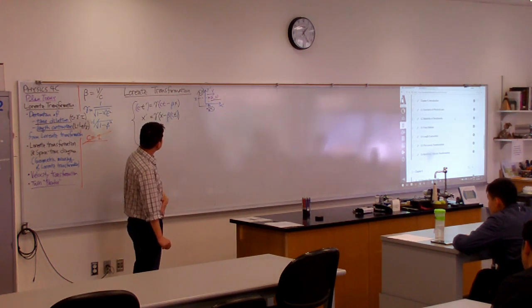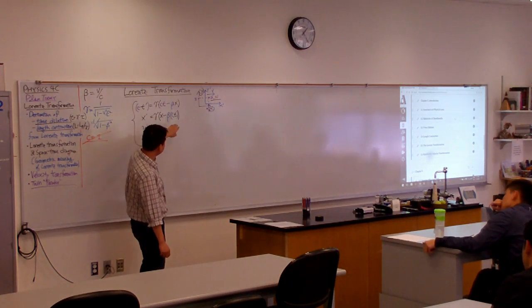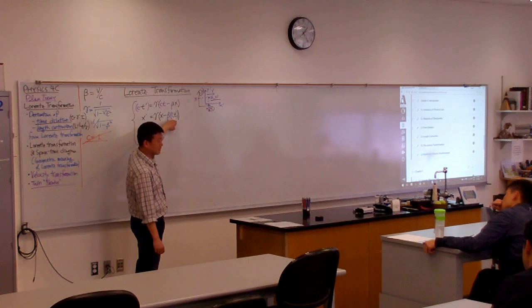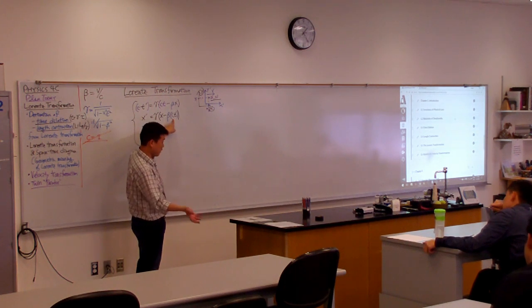So in Galilean transformation, this is still pretty significant, right? Beta times C is still a fairly large number.